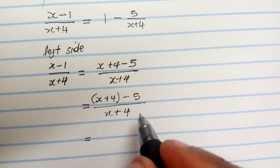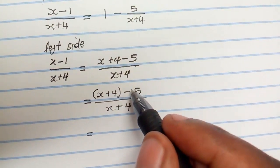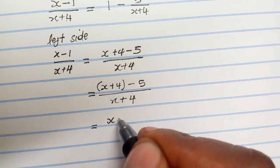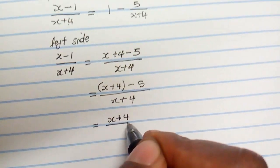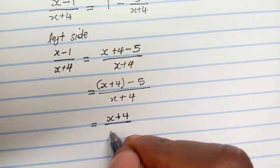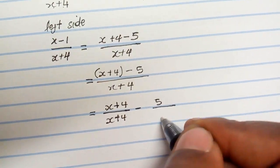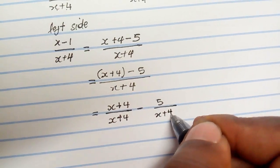And then what you do is you separate them by the operational sign minus and the division sign. So what you do next is x plus 4, you separate it, you split it together with x plus 4 and then minus 5 all over x plus 4.